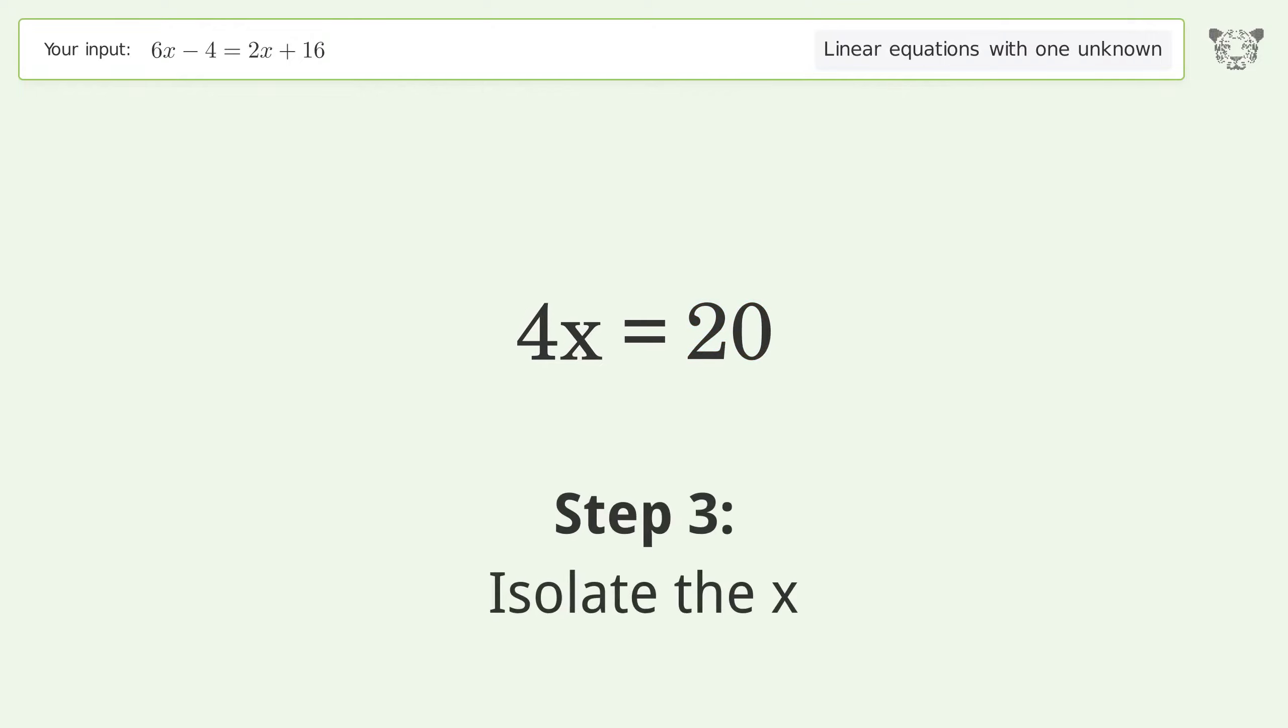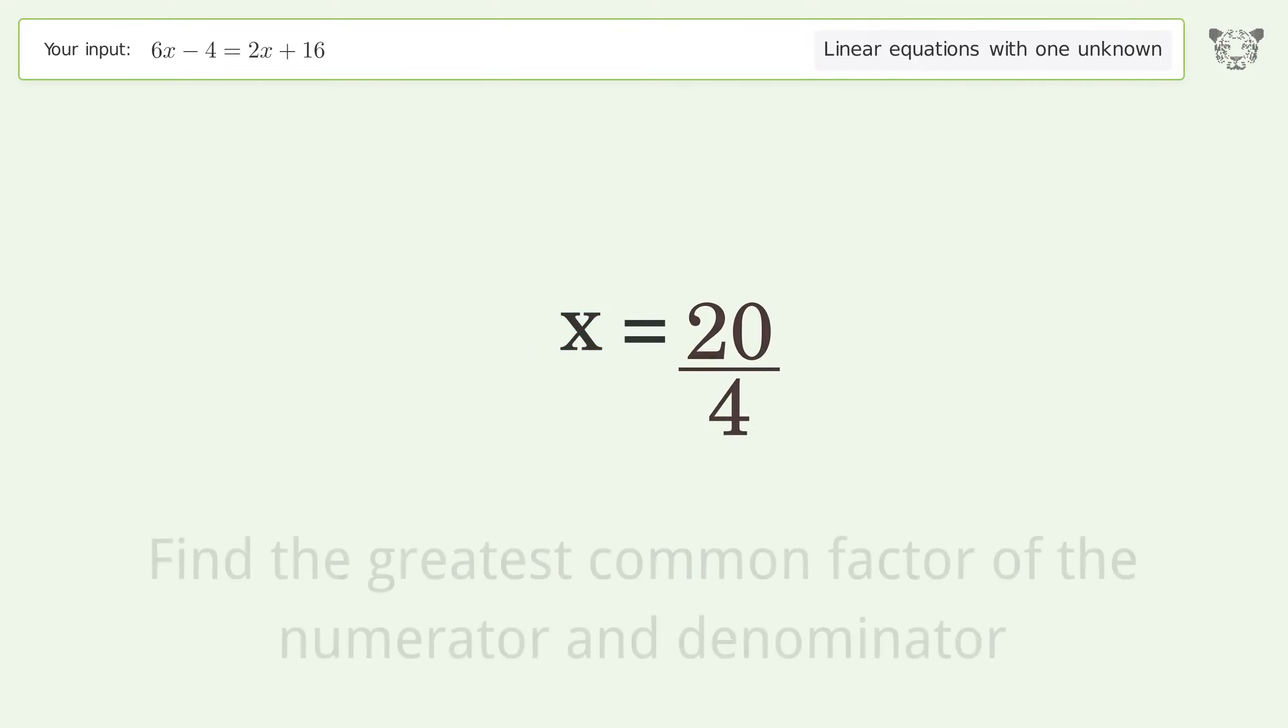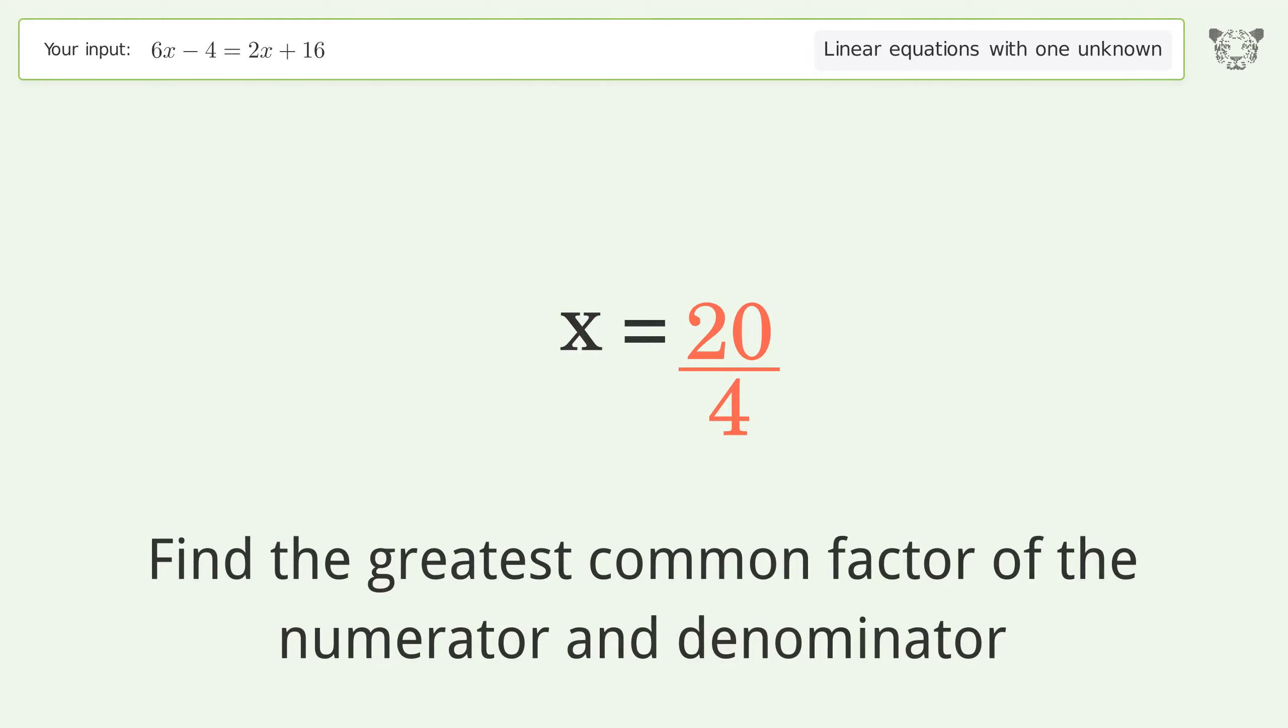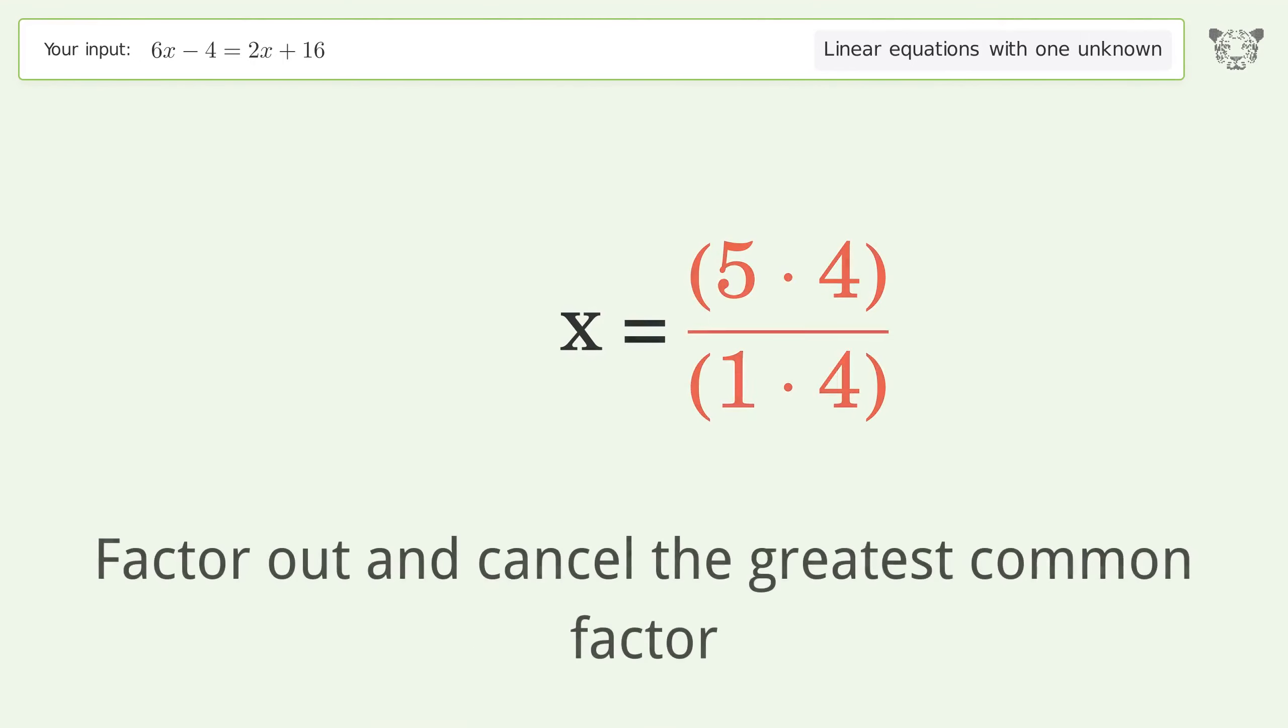Isolate the x. Divide both sides by 4. Simplify the fraction. Find the greatest common factor of the numerator and denominator. Factor out and cancel the greatest common factor.